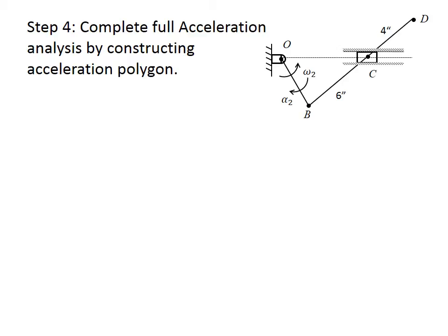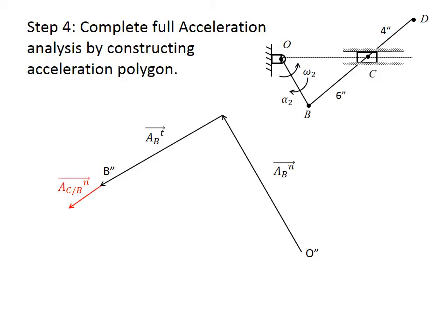Next, we construct the full acceleration polygon. We start with the acceleration of point B, for which we have the most information. We draw AB normal from the origin O', then continue with the tangential component AB tangent. The endpoint gives the total acceleration of B as a vector from O' to B'. Since the relative acceleration is between B' and C', we start from B' and draw the vector ACB normal, which is parallel to BC from C toward B, with known magnitude.